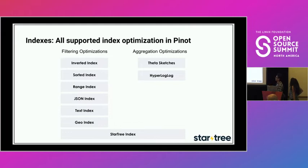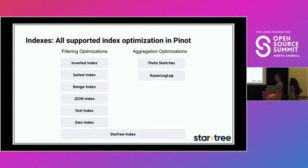Why do we have so many indexes? Because we tailor these indexes to different types of user experiences and use cases. For example, in Uber's use case, geo fence indexes would be much more important than others. That's why we think Pinot is the one-size-fits-all platform for all types of real-time analytics. It's also very easy to add new indexes — the indexing algorithm framework is so flexible that the range index and JSON index were added in just a couple of weeks from idea to merged code.